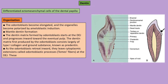As odontoblasts retreat inward, they leave cytoplasmic extensions behind called odontoblastic processes — also known as Tomes' fibers — which are the nerve fibers found inside the dentinal tubules. These odontoblastic processes release matrix vesicles that initiate mineralization by deposition of hydroxyapatite crystals. The first dentine formed is called mantle dentine, and all dentine deposited thereafter is called circumpulpal dentine.